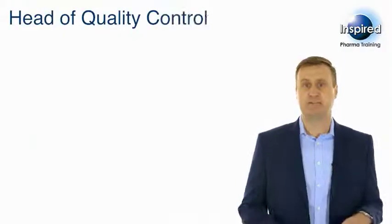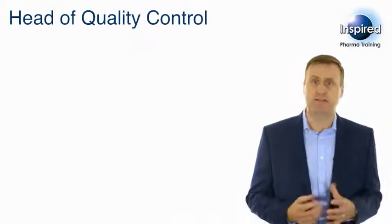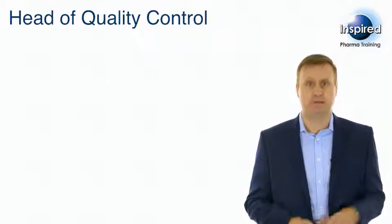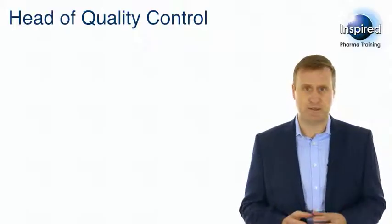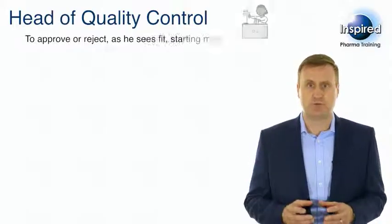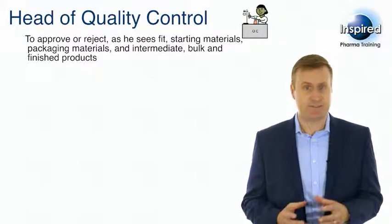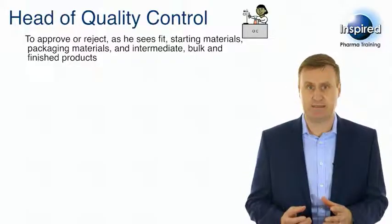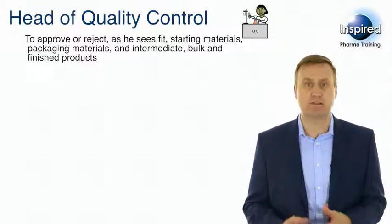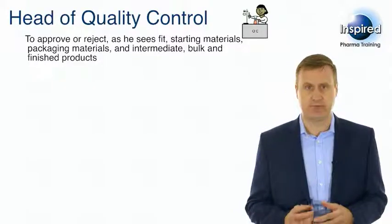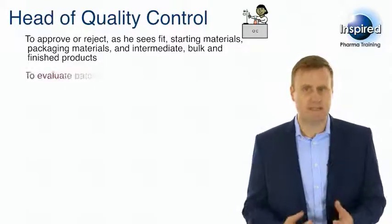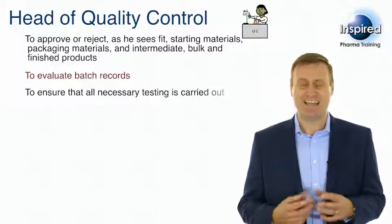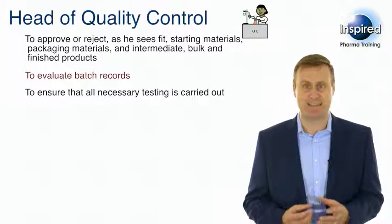The duties of the Head of Quality Control are described in Clause 2.6 of Chapter 2. These are as follows: to approve or reject, as he sees fit, starting materials, packaging materials and intermediate bulk and finished products; to evaluate batch records; and to ensure that all necessary testing is carried out.